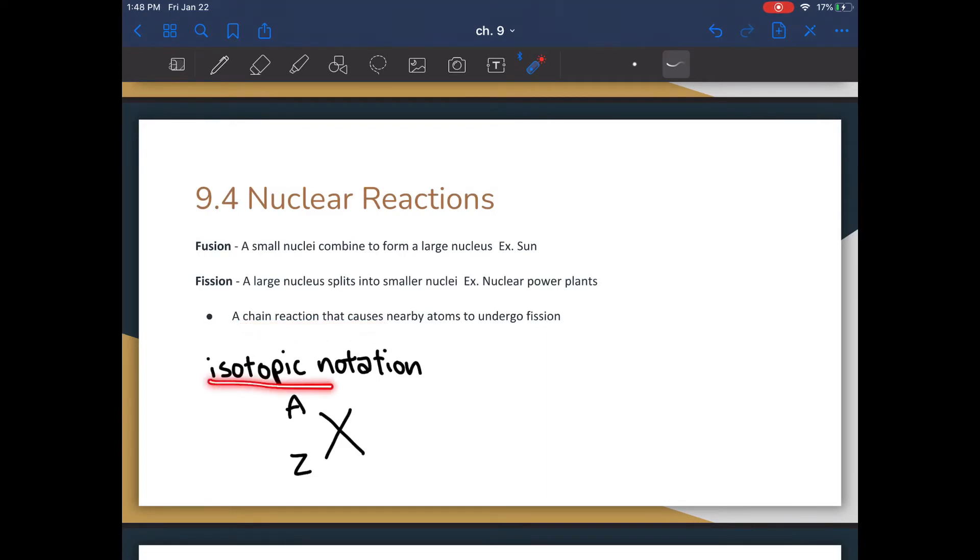Nuclear reactions are written in something called isotopic notation, where this large X here will be where you'll write your atomic symbol, where the Z is where you'll write the number of protons, and A is where you'll write the mass number. This notation is kind of redundant, because the number of protons necessarily defines what element it is.